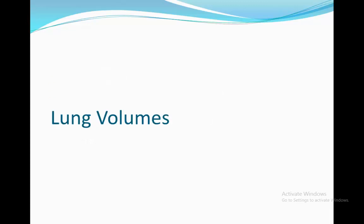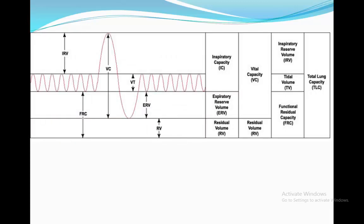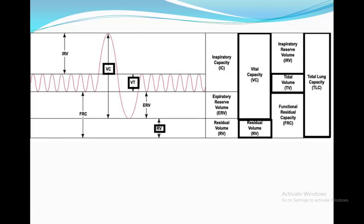Lung volumes. As you can see, the lung volumes are composed of many components, but we'll only focus on four, which I believe to be really important in helping us differentiate between the different respiratory diseases. These four are tidal volume, vital capacity, residual volume, and total lung capacity, and each one represents different parts of respiration.